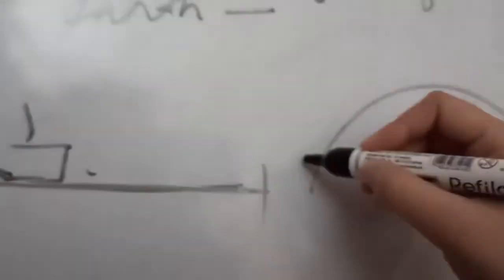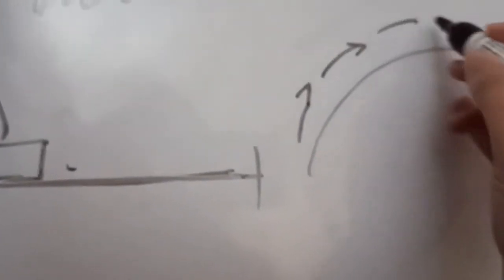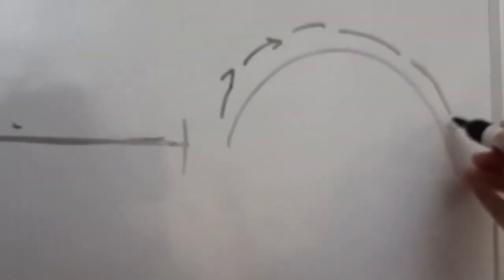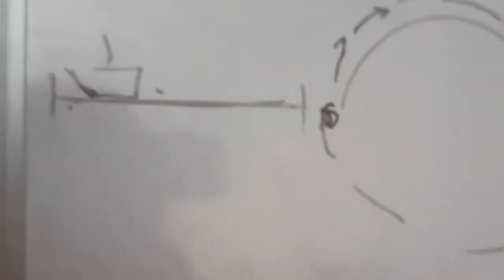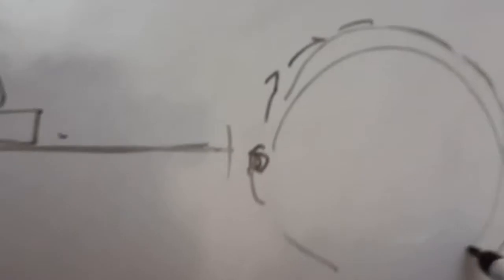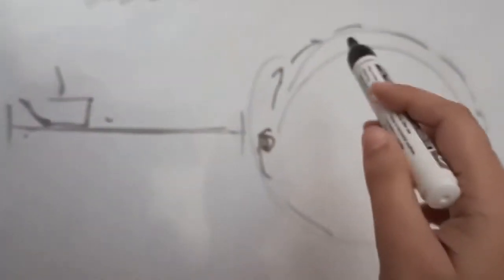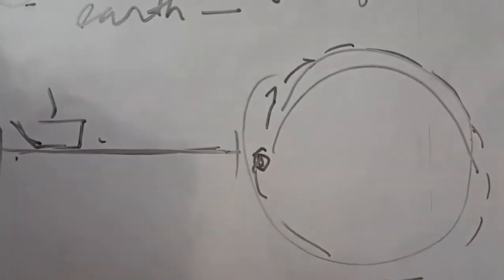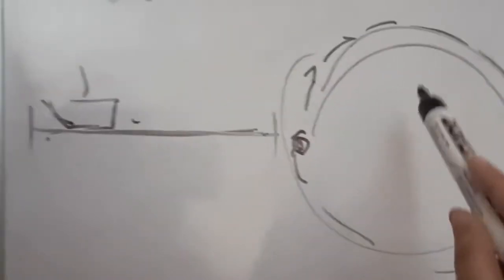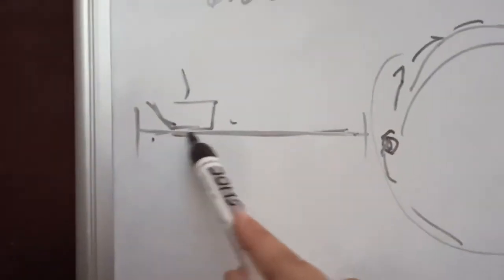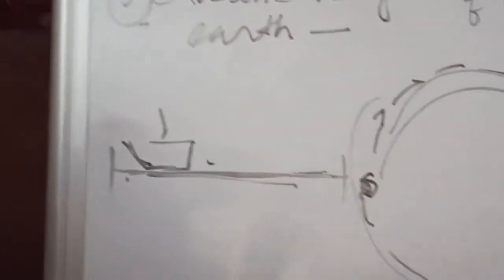They traveled in a circular manner and returned to the same point from where they started. In this way, they proved that the Earth is spherical in nature or circular in nature, rather than a flat surface area.